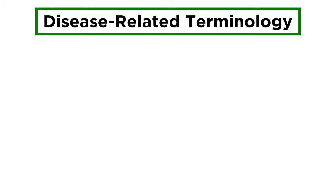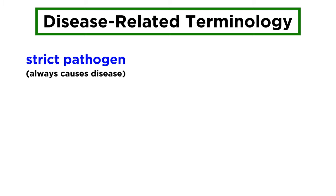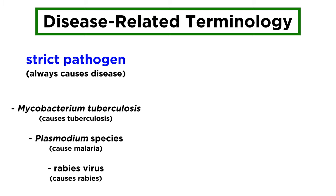Finally, there are a few terms we should know that describe a microbe's propensity for causing disease. A strict pathogen is an organism that is always associated with human disease. Examples include Mycobacterium tuberculosis, which causes tuberculosis, Plasmodium species, which cause malaria, and the rabies virus, which causes rabies.